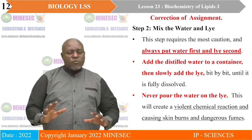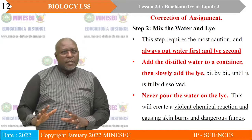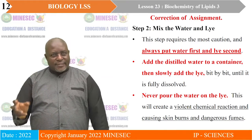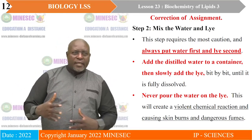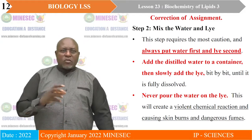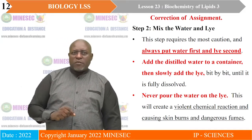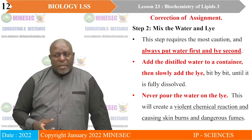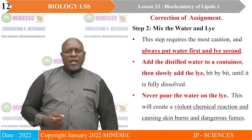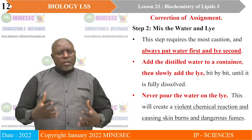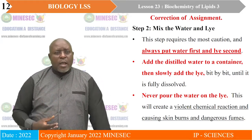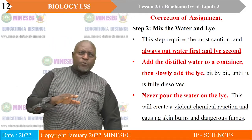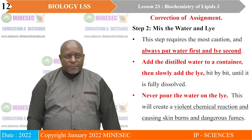Step two: mix the water and the caustic soda. These steps require caution. Always put water first and then caustic soda or the lye second. Add the distilled water to a container and then slowly add the caustic soda bit by bit until it's fully dissolved — don't add it in a rush. Never pour water onto the caustic soda because it will produce a violent and dangerous reaction that can explode, burn your skin, and produce dangerous fumes that will hamper your respiratory system. You must always put water first, then the caustic soda second.